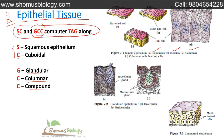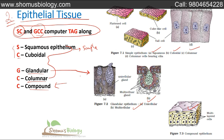Glandular epithelium can be unicellular or multicellular, and the third type is compound epithelium. These cover all the types of epithelial tissue. The reason SC is kept separate — squamous and cuboidal — along with columnar, is that those three are simple epithelium, while compound and glandular are totally different categories.